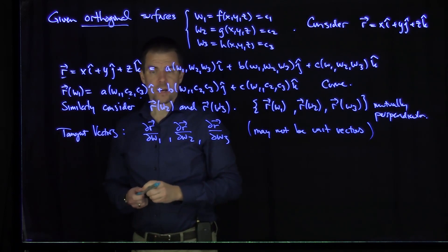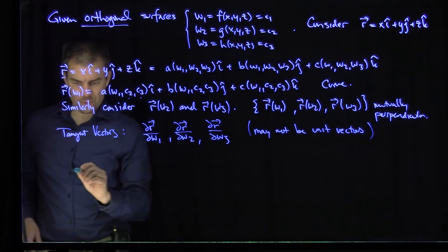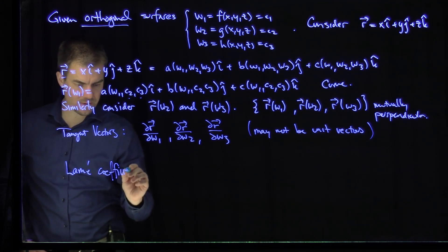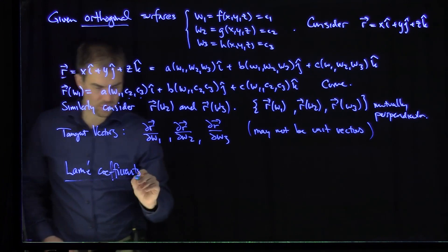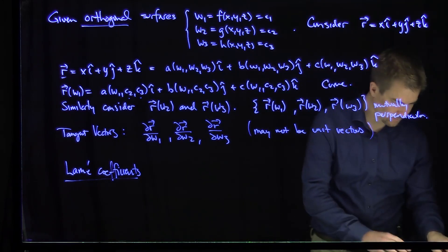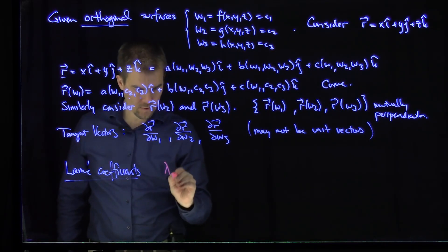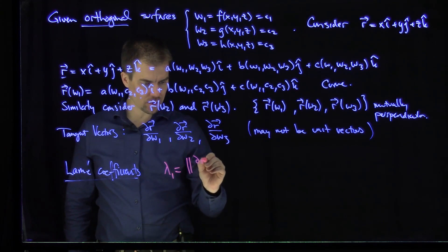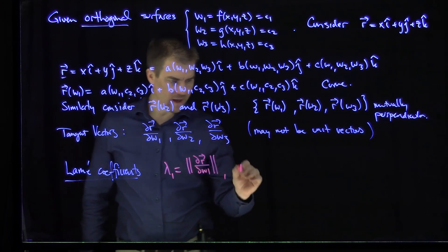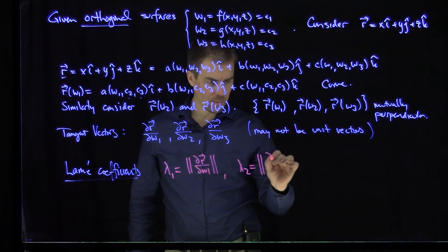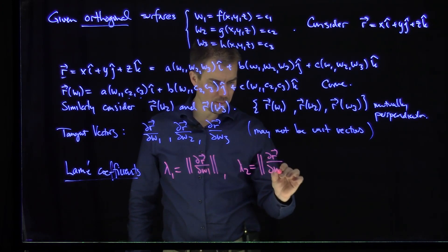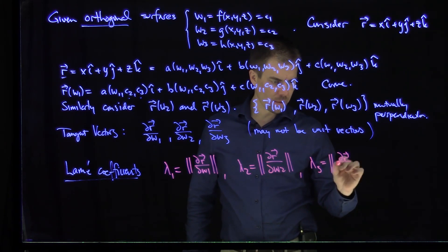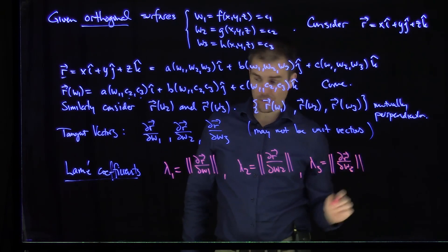What we're going to do now is define the Lamé coefficients. The Lamé coefficients are just the norms of these tangent vectors. So our Lamé coefficients are: λ1 = |∂r/∂w1|, λ2 = |∂r/∂w2|, and λ3 = |∂r/∂w3|. And these are the Lamé coefficients.